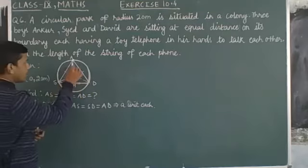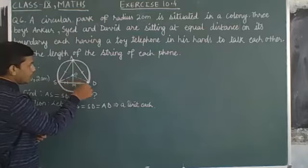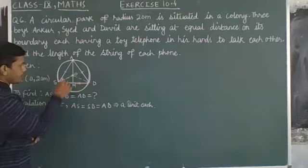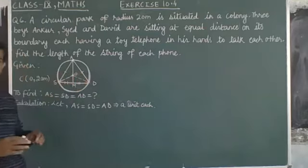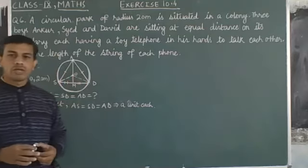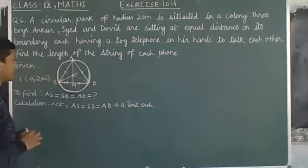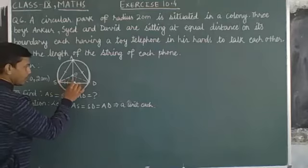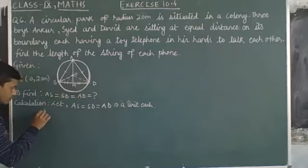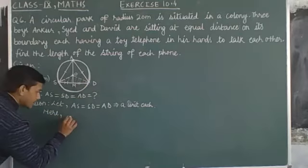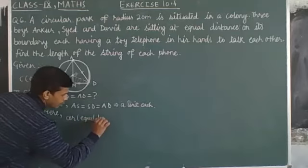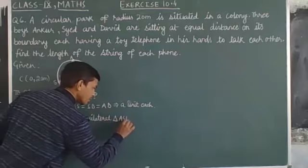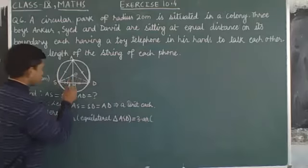Here you could observe that triangles OAS, OSD, and ODA are congruent to each other due to SSS rule. All three triangles are congruent to each other, that's why their areas would be equal. So we could equate the area of equilateral triangle ASD as equal to three times the area of any one of these three congruent triangles. So area of equilateral triangle ASD equals three times the area of triangle OSD.